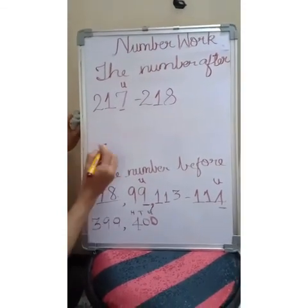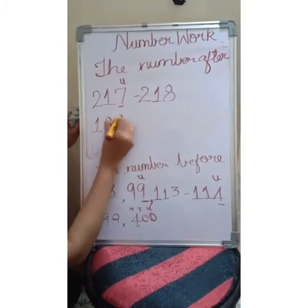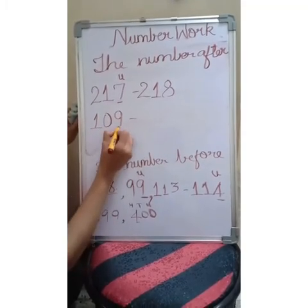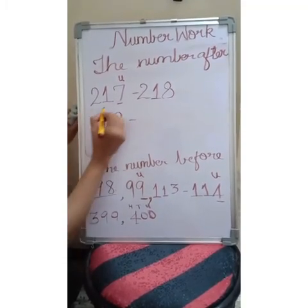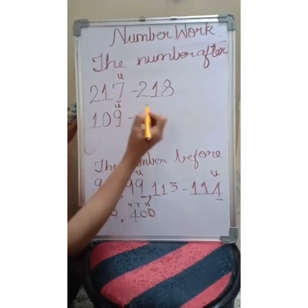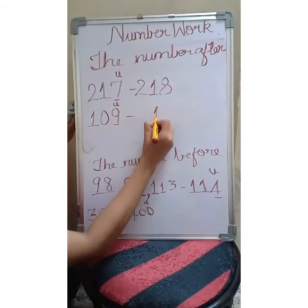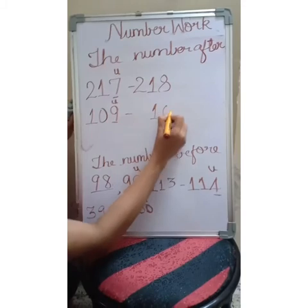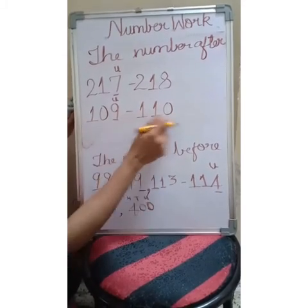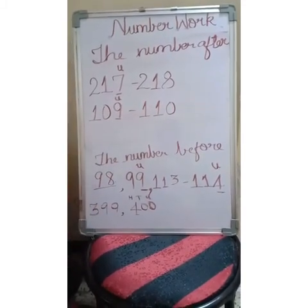Next, I pick one hundred and nine. What is the number in the units place? It is nine. What comes after nine? Ten. So your number after one hundred and nine is one hundred and ten.